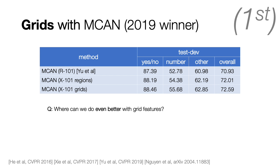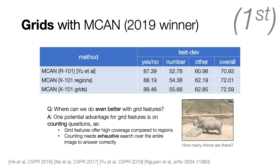But where can we do even better with grid features? One place is counting, because grid features can offer higher coverage than regions, and counting needs exhaustive search to answer questions. So we next developed a counting module called MOVIE on grids.